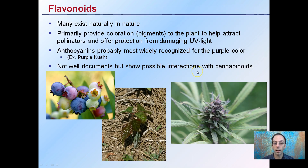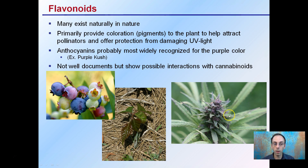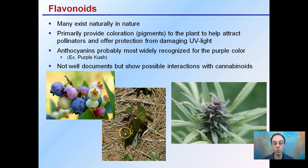Flavonoids — many exist naturally in nature. They primarily produce coloration or pigments in the plant to help attract pollinators and offer protection from damaging UV light. Anthocyanins are probably the most widely recognized for their purple color, such as in Purple Kush. They could also add the purpleness and blueness of blueberries. Poison ivy, when it first comes out, will have these flavonoids — specifically these anthocyanins — to help shield it from damaging UV or intense sunlight.